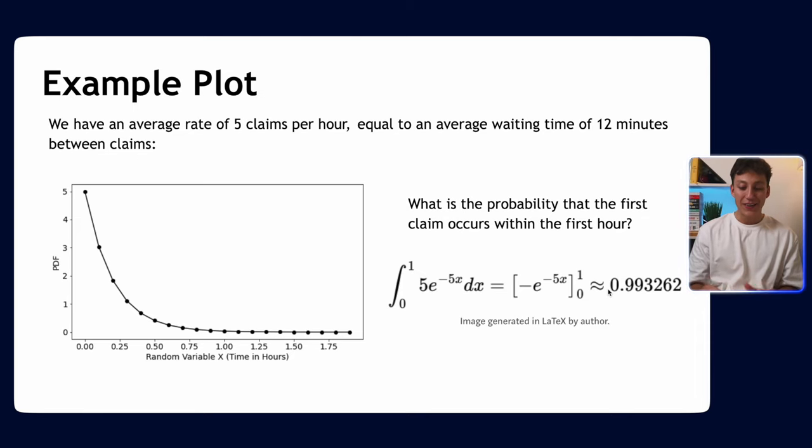What we're saying is it's very likely that the claim will happen in the first hour, which makes sense because we expect it to happen on average every 12 minutes. Eventually we should get the first claim within the first hour by pure probability. But there is a small chance we may not get it—0.7%. As you can see, the more you integrate this line, like if you go to two hours, the bigger this number will get. The integral under the whole PDF is one, but the integral between zero and 0.5 is where the majority of the claims will happen.